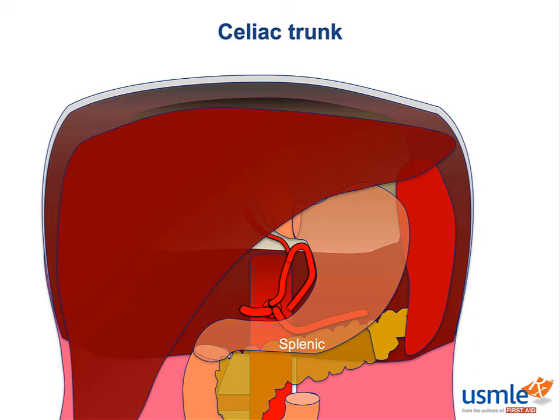The splenic artery is retroperitoneal for most of its course, and along the way it supplies the body and tail of the pancreas, but it emerges in the splenorenal ligament to supply the spleen. Distally, it's also a major player in the blood supply of the stomach, giving rise to the short gastric arteries that supply the fundus and the left gastroepiploic artery that makes up half of the anastomosis on the greater curvature of the stomach.